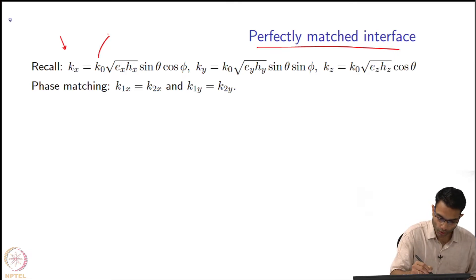And what is this k naught in general going to be equal to? We wrote omega by c, right, but omega by c is in which medium? Vacuum, but in general we may not have vacuum. So omega by c, and c in terms of material properties is 1 by root mu epsilon.